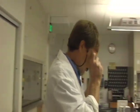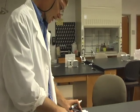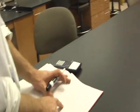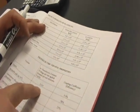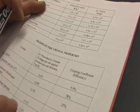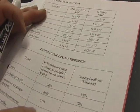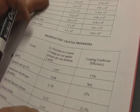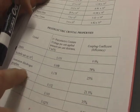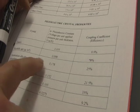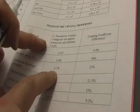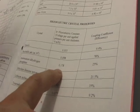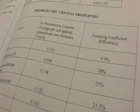They've got a table here of piezoelectric constants. And quartz, voltage per unit applied pressure per unit thickness, quartz is 0.055. Look at Rochelle salt, 0.098. Ammonium dihydrogen phosphate, 0.178. There are a lot of piezoelectric crystals that have much higher piezoelectric constants than quartz. But quartz is just so darn cheap and it makes it worthwhile.